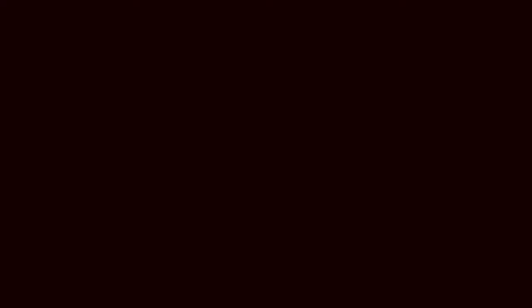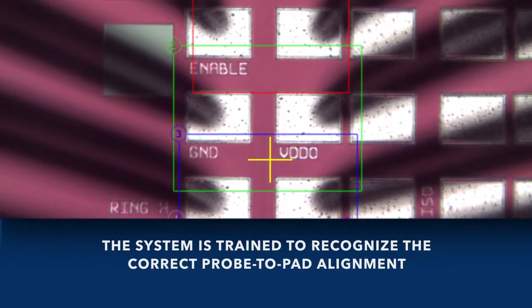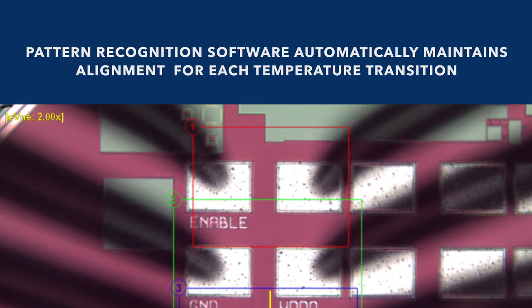It starts with our ViewTrack software in combination with our eViewPro microscope technology. This assures constant contact quality on small pads. First, the system is trained to recognize the correct probe-to-pad alignment. Once the correct alignment is determined, pattern recognition software helps position the probes to maintain this alignment as the temperature set changes.